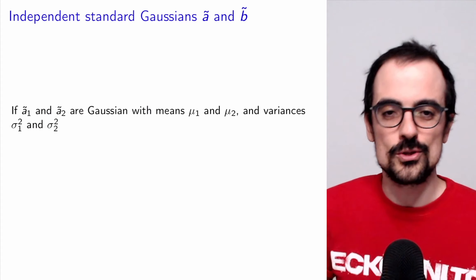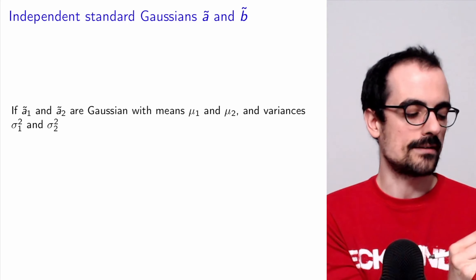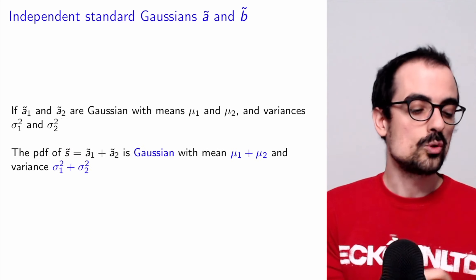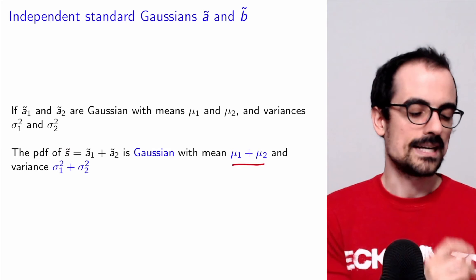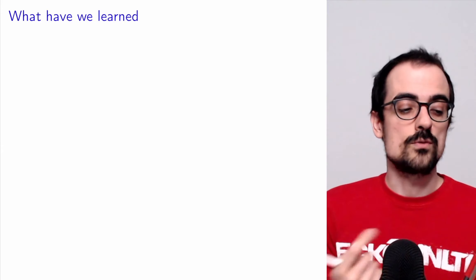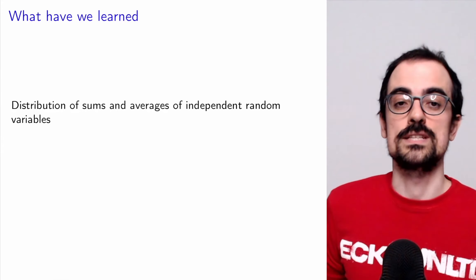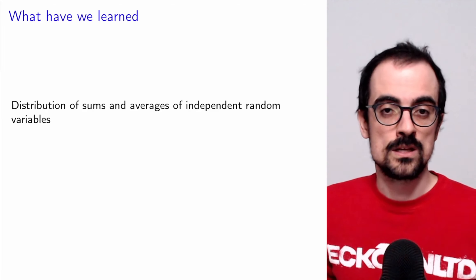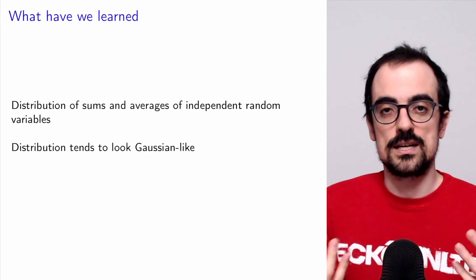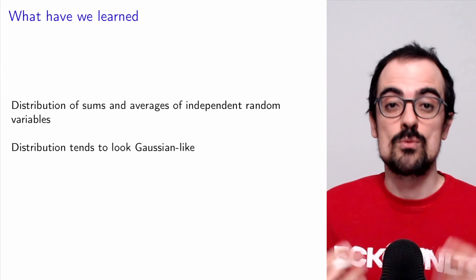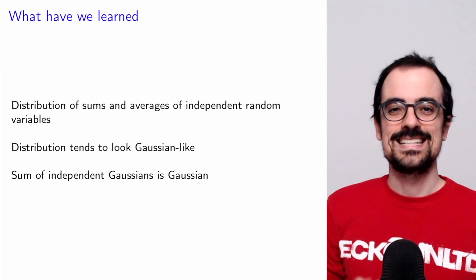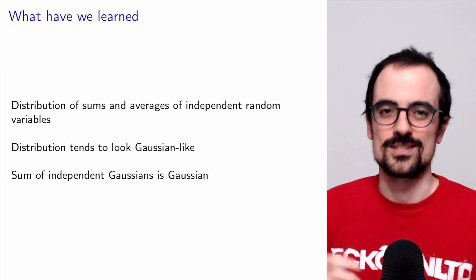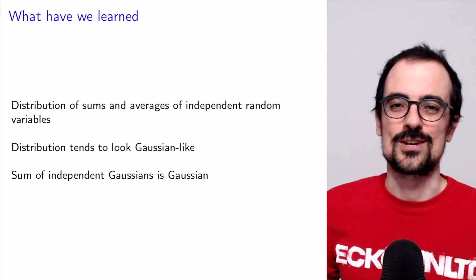You could follow the same argument to show that if A1 is Gaussian with mean mu1 and variance sigma1 squared, and A2 is Gaussian with mean mu2 and variance sigma2 squared, then A1 plus A2 is Gaussian with mean mu1 plus mu2 and variance sigma1 squared plus sigma2 squared. In summary: we've learned the distribution of sums and averages of independent random variables is obtained by convolving their PMFs or PDFs. This convolution smooths distributions so they become Gaussian-like very quickly, and sums of independent Gaussian random variables remain Gaussian — connecting to why everything tends to become or stay Gaussian-like.